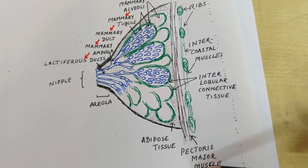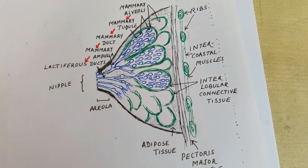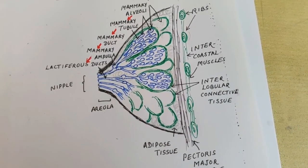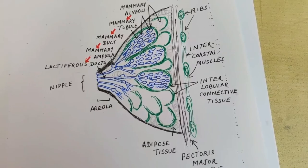mammary gland is organized on the pectoralis muscle of the female. Thank you.